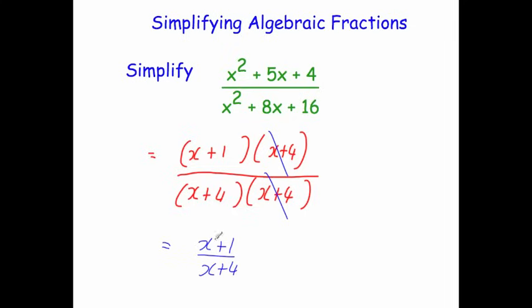Notice I haven't written the brackets. Whenever it's just one bracket — one expression like x plus 1 — you just write that in the numerator without brackets. Likewise, x plus 4 in the denominator is written without brackets. So that's how you simplify that algebraic fraction.